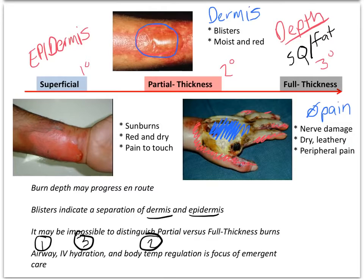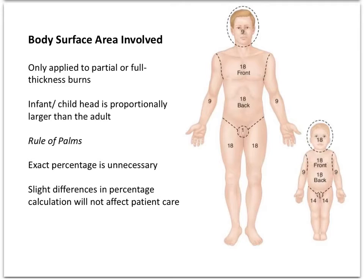After we notice the depth of the burn, we notice exactly where it's at on the patient's body and how much of that burn injury covers the patient's body — that's what we call the body surface area involved, or BSA. We have a nice little measurement that we use to calculate and approximate it. In the field, we don't really care about being exact. Exact percentages are completely unnecessary — let the physicians, PAs, and nurse practitioners hammer those out in the clinical environment. We need to get as close as possible.